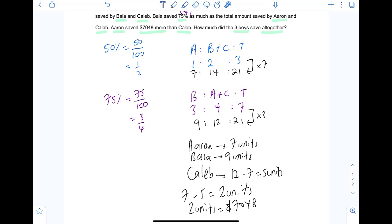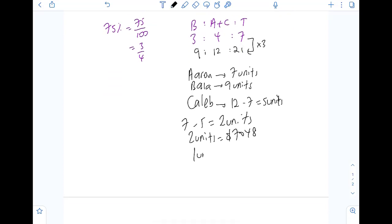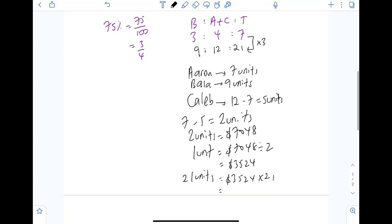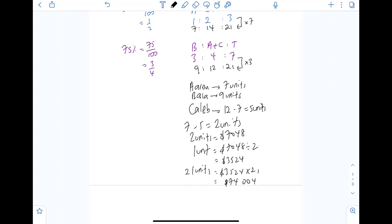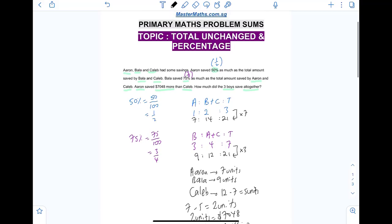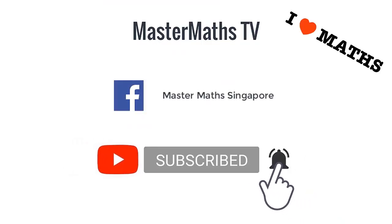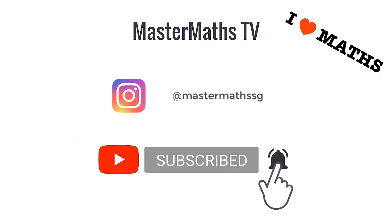Question is, how much did they save altogether? Total is 21 units. So, we find 1 unit first. 7,048 divided by 2. 3,524. And we proceed to find 21 units. 3,524 times 21. $74,004 is our final answer for this question.